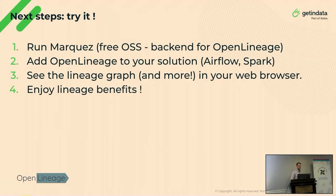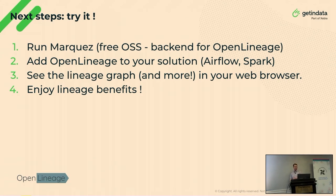Here's the most important slide — the next steps. Just try it out. If you have Airflow running, run a backend, choose Marquez, host it — it's really easy, there's a Docker image you can get. Enable the Spark or Airflow integration — that's plug and play. Just install it and see the lineage graph. If everything looks good, you can have all the advantages we talked about. If there are some gaps in your graph, try to fill them in and repeat the process. Reach out to the docs, reach out to the Open Lineage Slack — there is a vibrant community there that can help you out.